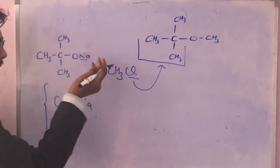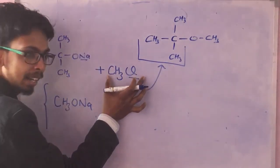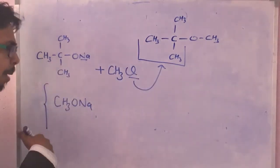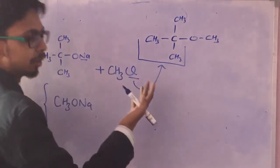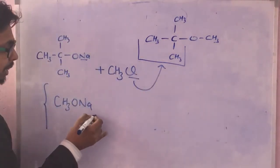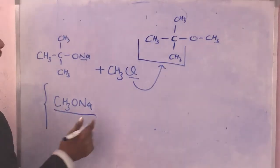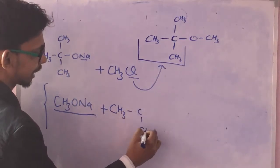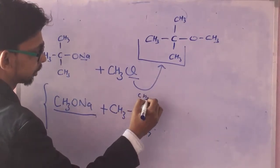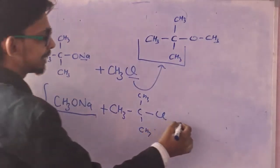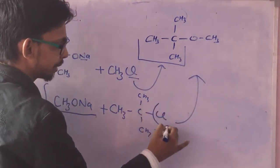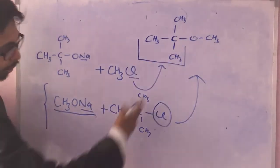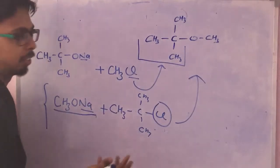In the first case I have used primary alkyl halide and tertiary sodium alkoxide. But someone may say we do it the other way around - we start with primary alkoxide and we use tertiary CH3-C alkyl halide. Then also we'll be getting the same product. Logically it looks like yes, it is possible. We'll be getting the same product.